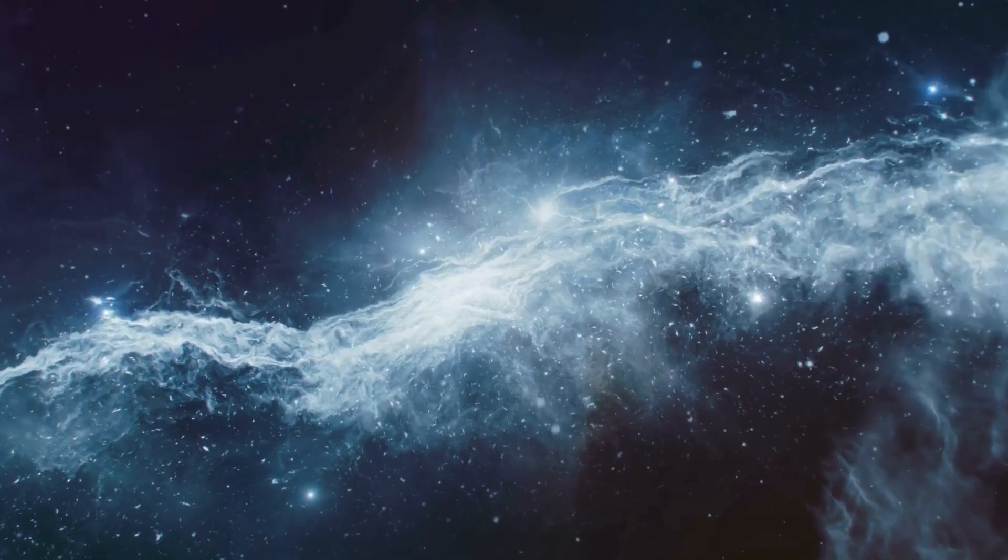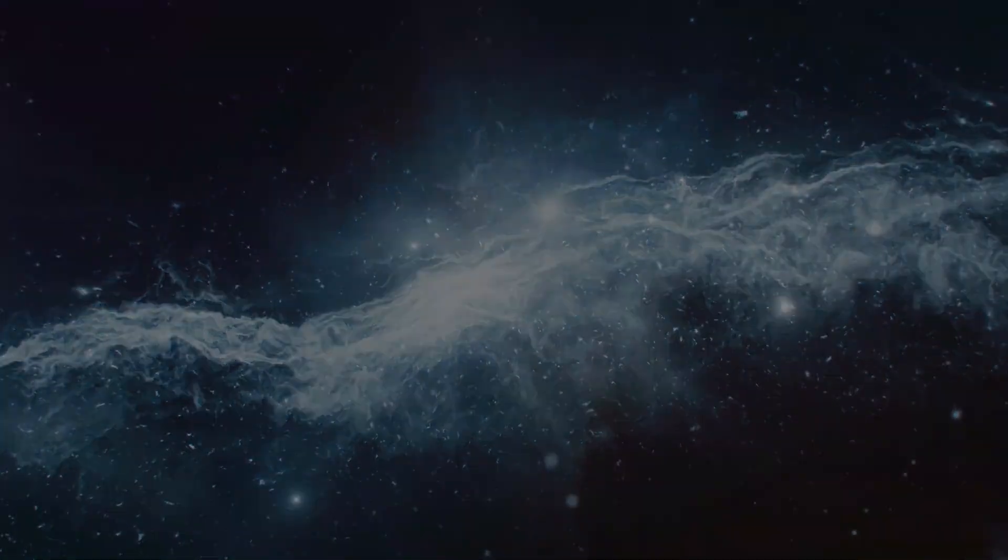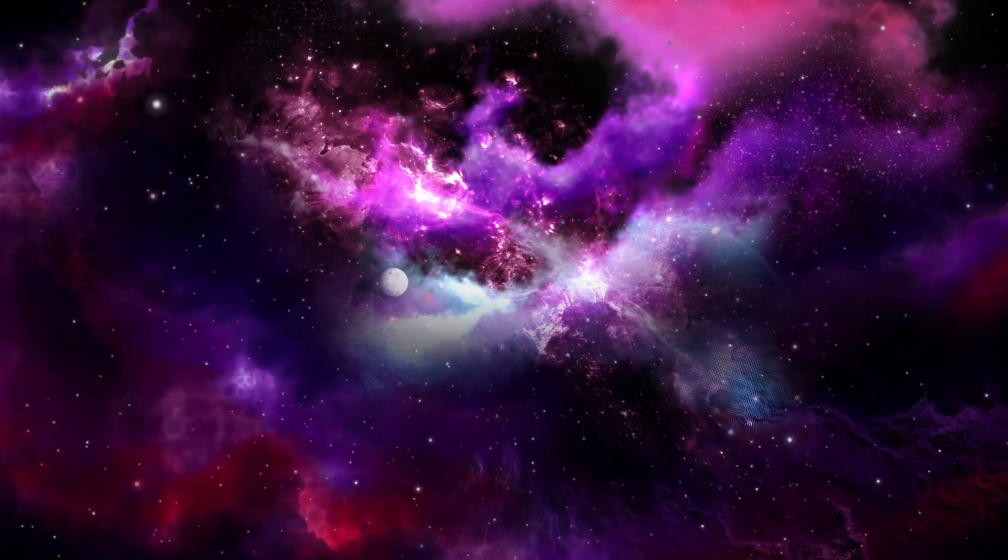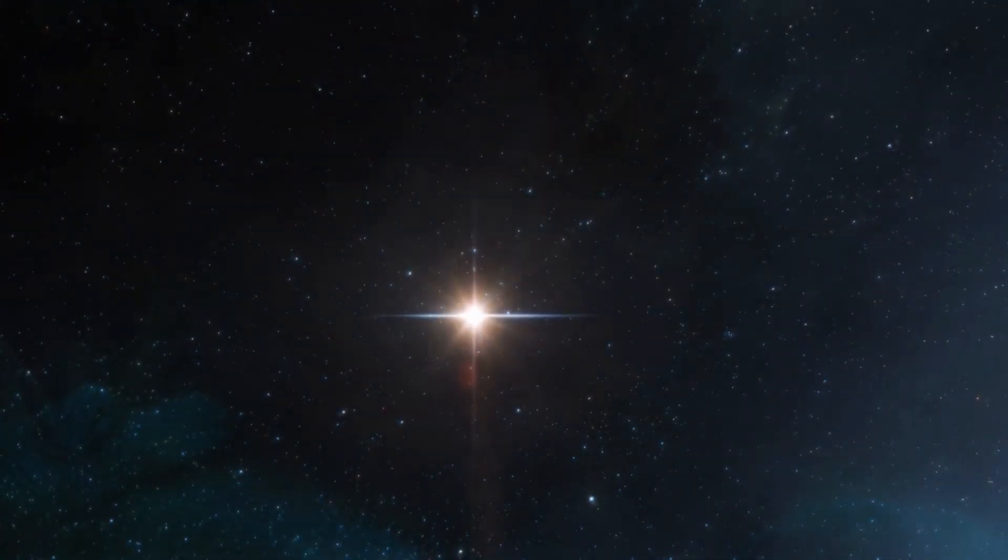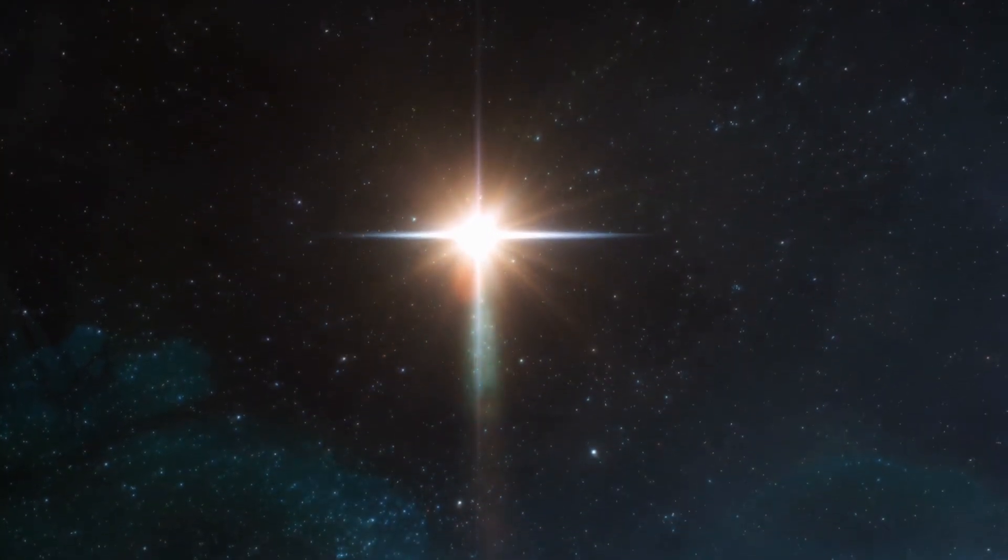Over time, chunks of this gas and debris are pulled together by gravity and collapse upon themselves, forming a protostar. Over millions of years, the star then continues to evolve as it passes through the different phases of its life cycle.